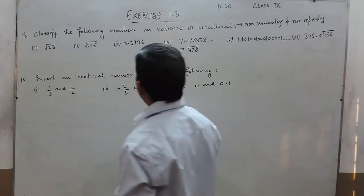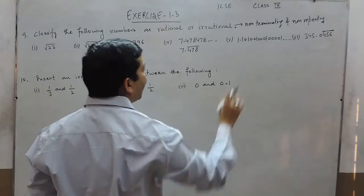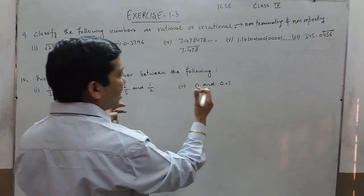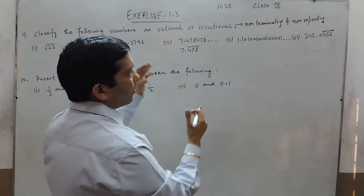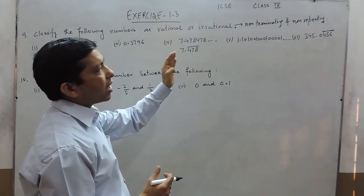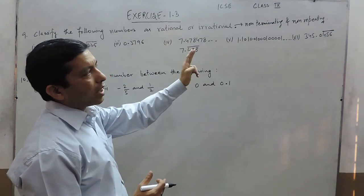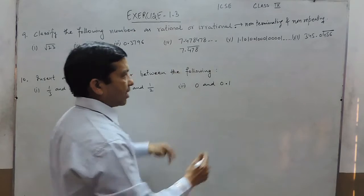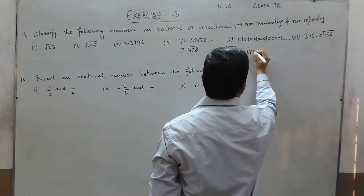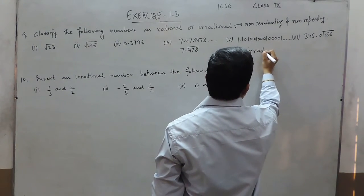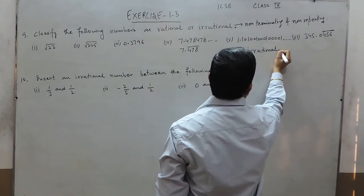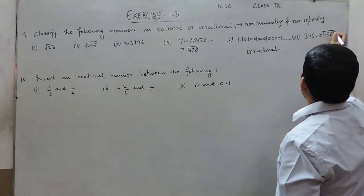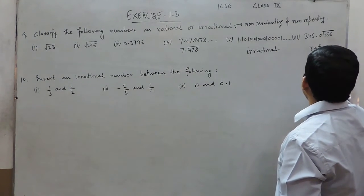So if we have to classify as rational or irrational, then in the decimal form, we have to understand that all numbers which are non-terminating and non-repeating decimals are irrational. So this is an irrational number. This is a repeating decimal, so this is a rational number.